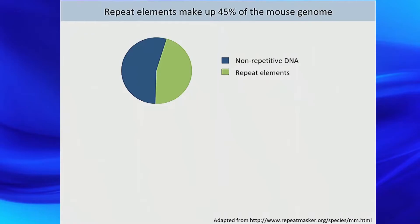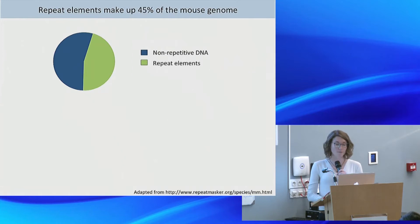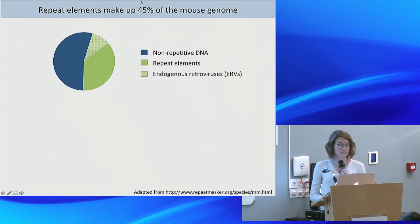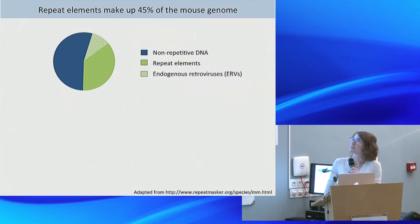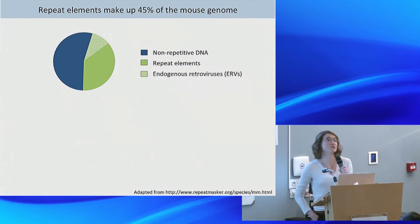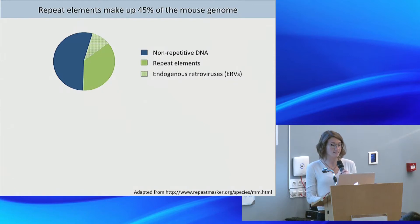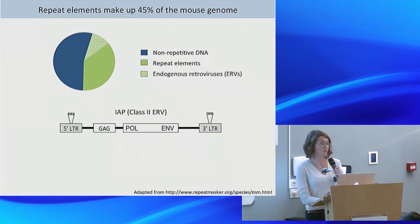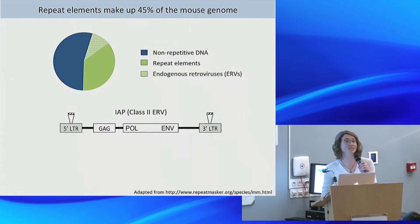I want to start with something you heard earlier this morning, which is that repeat elements make up almost half of the mammalian genome. It may not be quite as many as in plants, but that's still huge. And 10%, at least in the mouse, are made up of a specific type of repeat element called an endogenous retrovirus, or ERV. I want to give a bit more information on a specific type of ERV called an intracisternal A-particle, or IAP, because you'll be seeing these a lot.